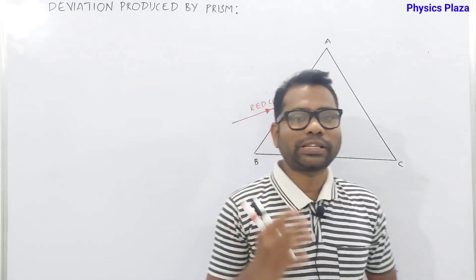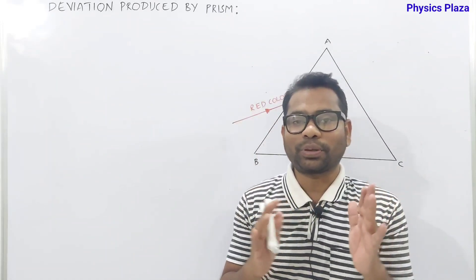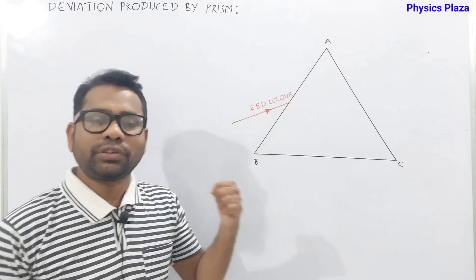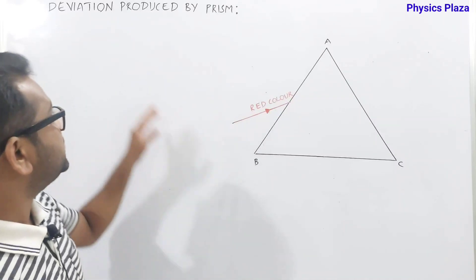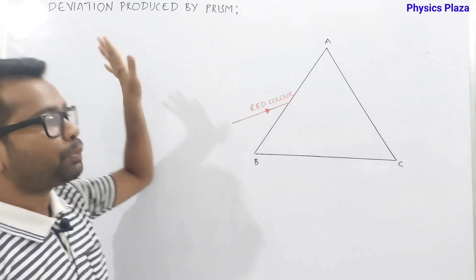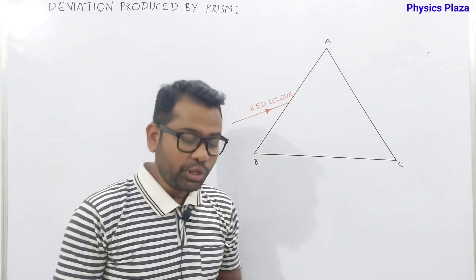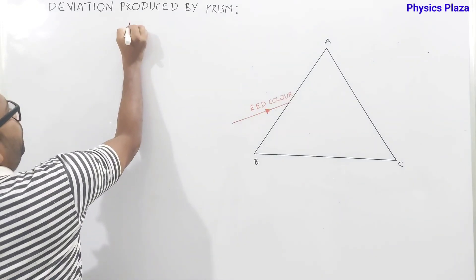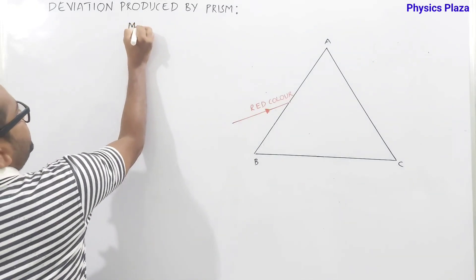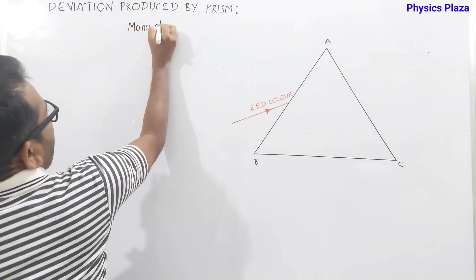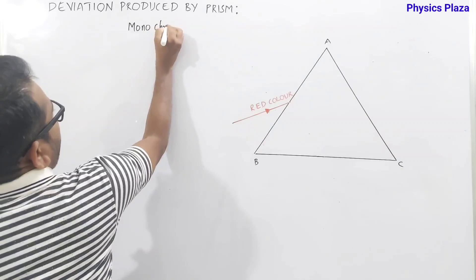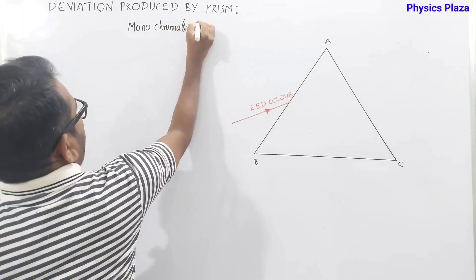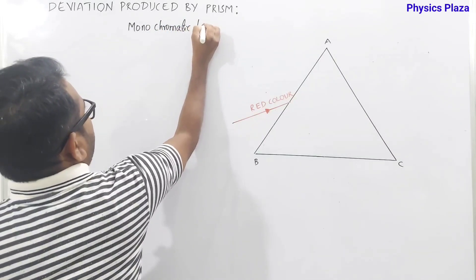Now that we've covered the keywords, let us start today's topic. The first topic is: deviation produced by a prism — specifically what happens when monochromatic light passes through a prism.